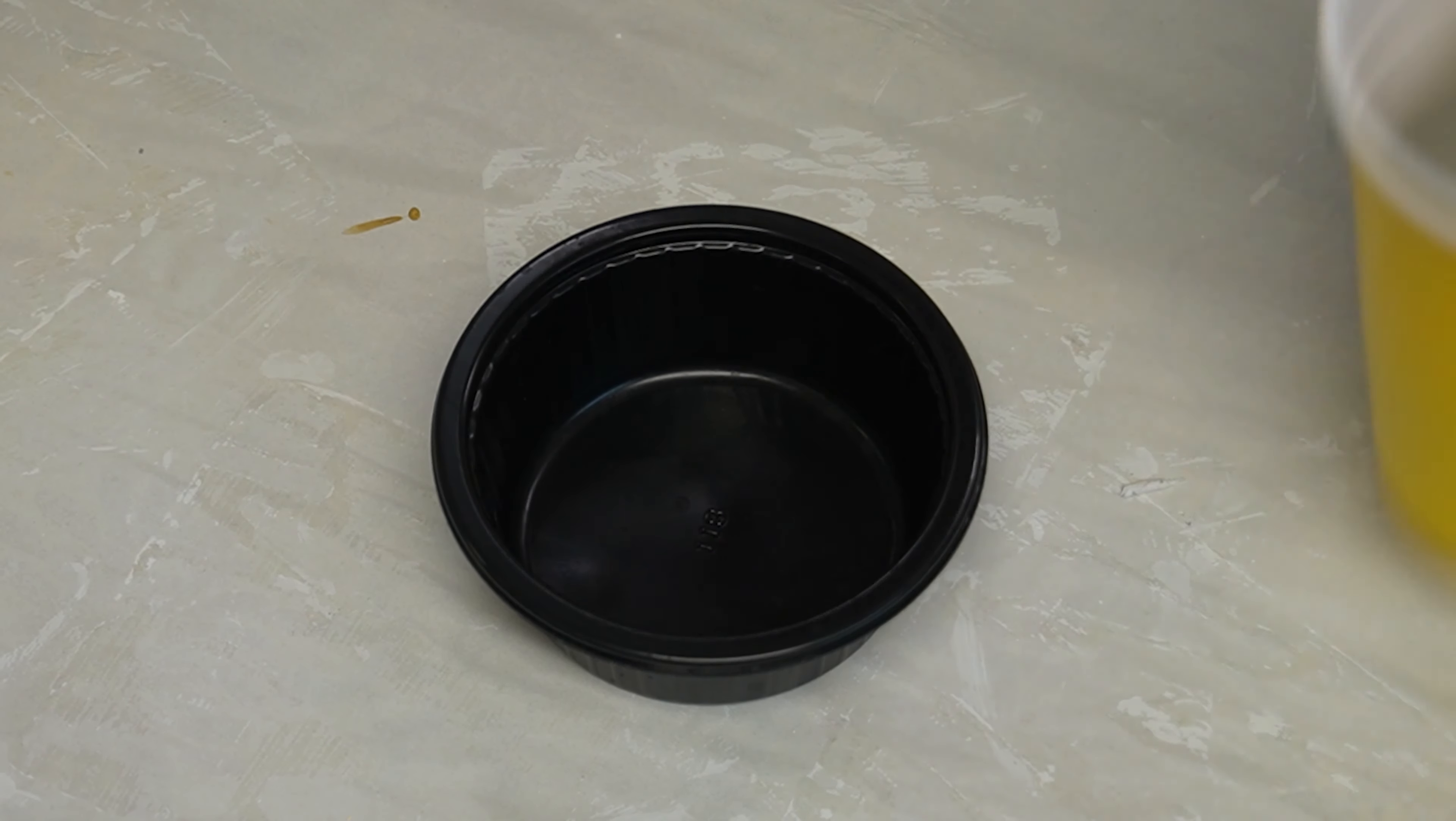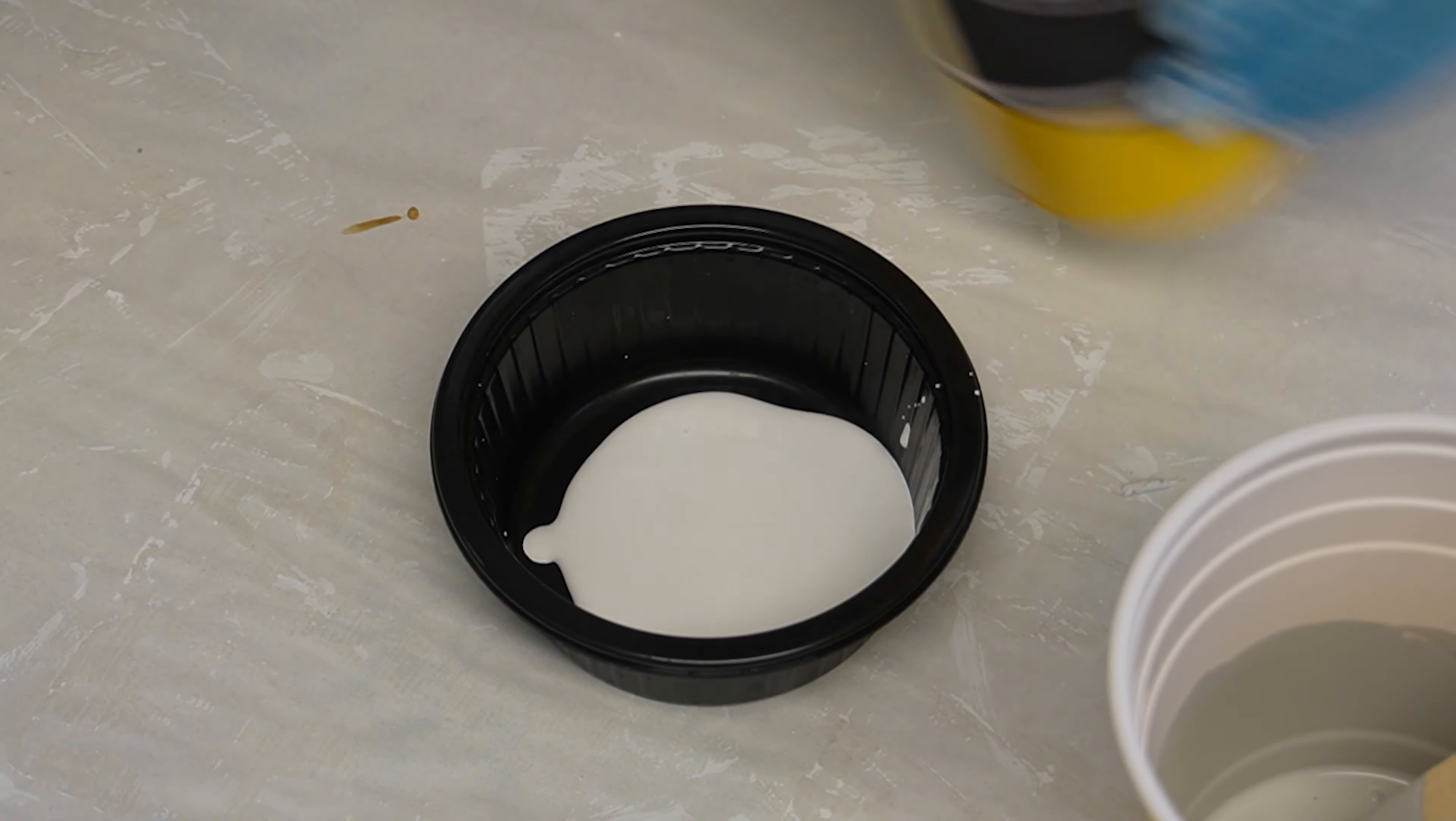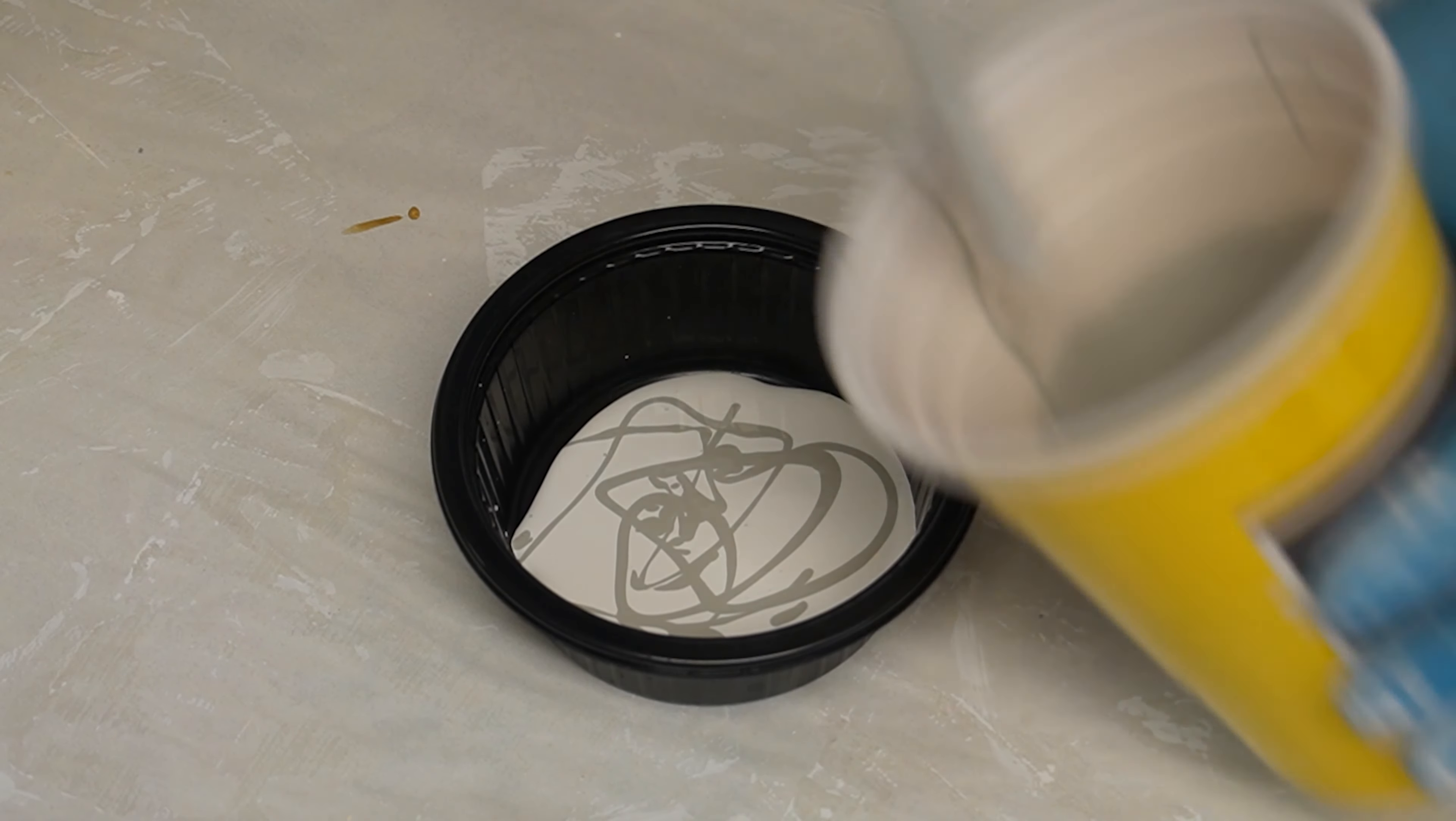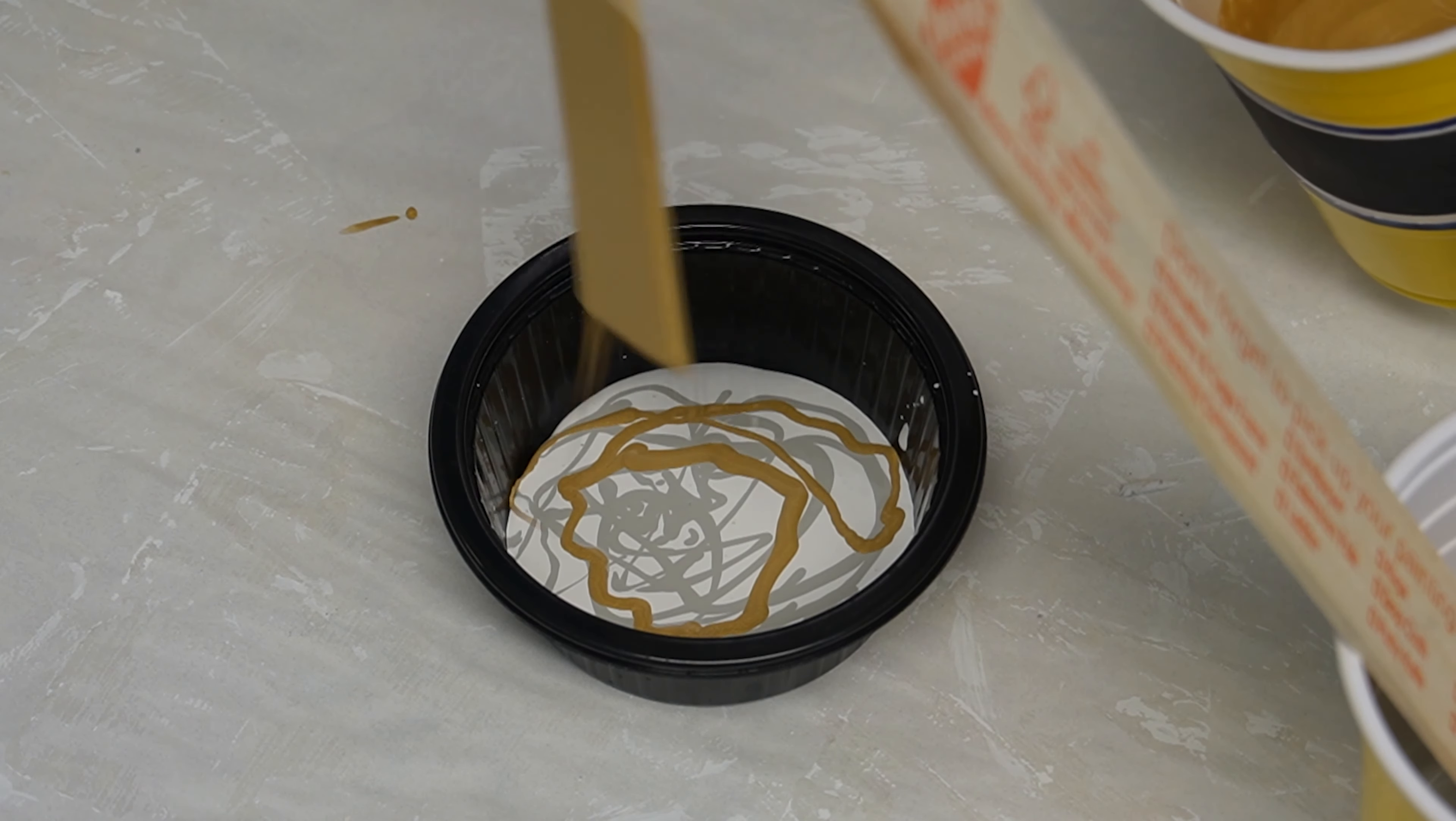Now for the fun part, or at least here's where it gets a little more exciting. I grabbed a new container and started layering the paints to create a design. I added some white paint, which was my base color. Then I dribbled in some gold and gray paint. I just did the dribble off my stir stick, which worked perfectly.